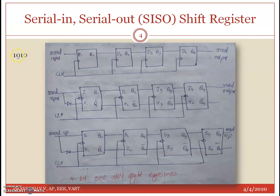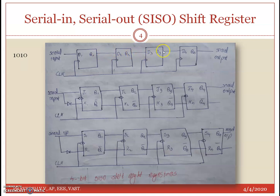Depending on the output of this flip-flop, the input is determined. If the input is 0 and the output evaluates to 0, because we still have 0, we use clock pulse 2 to propagate the data.